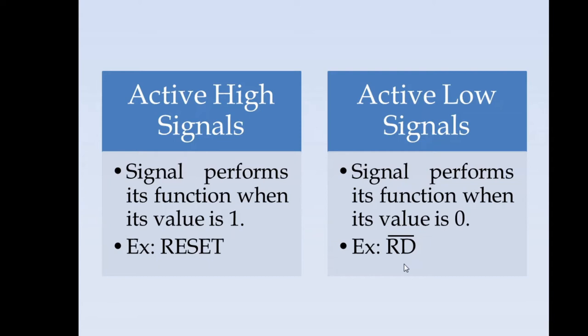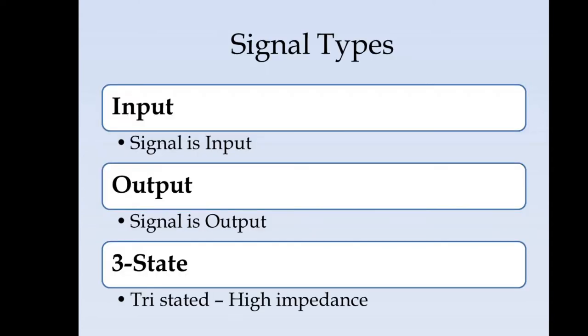The type of signals can be categorized into three. The first one being input signal which acts as an input to the microprocessor. The next one is the output signal, the signal is the output from the microprocessor to the other devices. The third one is tri-state or tri-stated, which is a high impedance state. We will see what is tri-state logic.